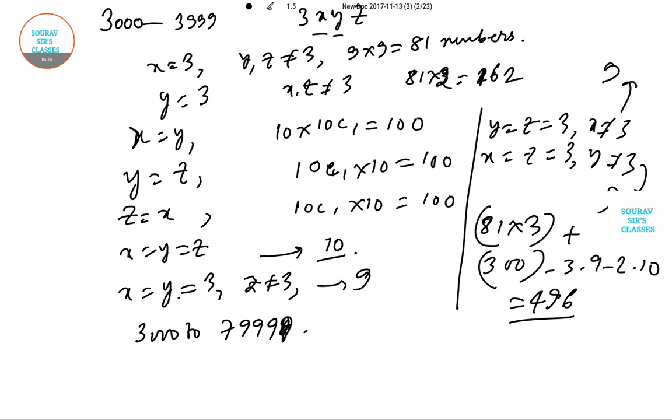The number of required numbers from 3000 to 7999 is 496 times 5 for 4000, 5000, 6000, 7000, which is 2480. And including 8000 itself, we get one more number, so 2481 is the answer, which is option D.